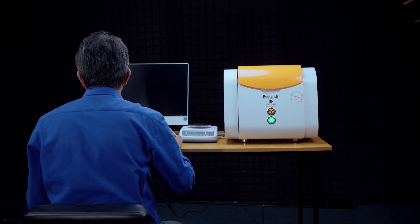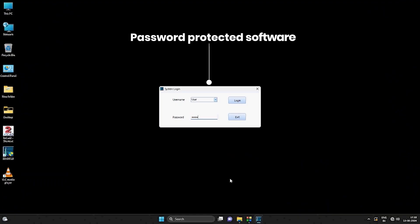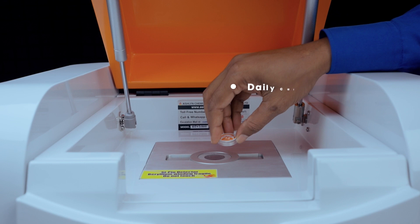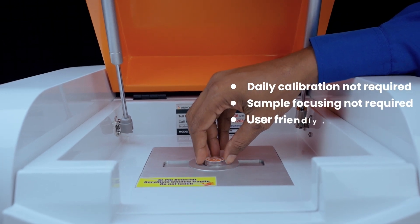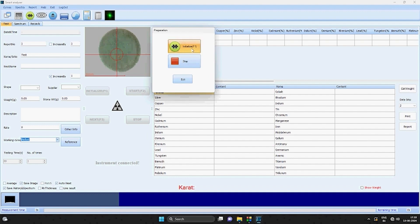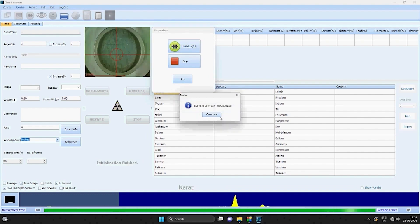Password protection features help avoid unauthorized use of the machine. The initialization process takes just 10 seconds with a silver sample, allowing users to verify machine stability before testing ornaments.